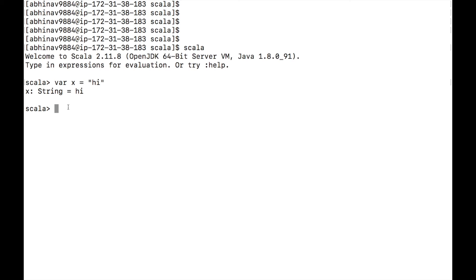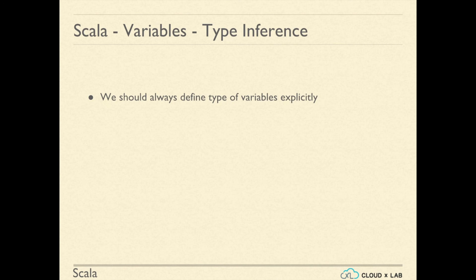Let us explicitly define the type of variable x as a string. Type var x colon string equals "high". We can see that variable x is a string. We should always try to explicitly define the type of a variable to ensure that the code is compiled faster and to avoid any ambiguity.